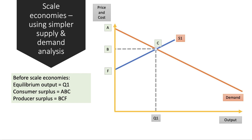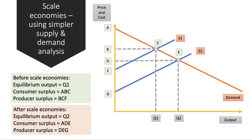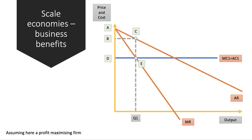One approach is to say that scale economies bring down the marginal cost or supply cost of production from S1 to S2. That allows a lower price, output rises to Q2, an increase in consumer surplus to ADE, and producer surplus DEG. An increase in both consumer and producer welfare can be shown using that diagram.